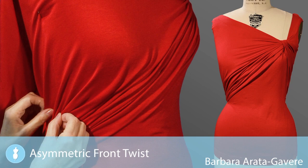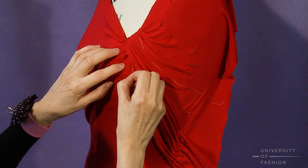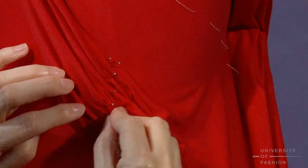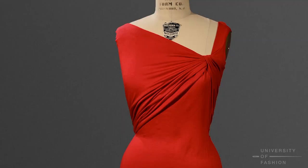This lesson is how to drape an asymmetric front twist and is part of our three-part series on draping twists to drape a tunic with side ruching.